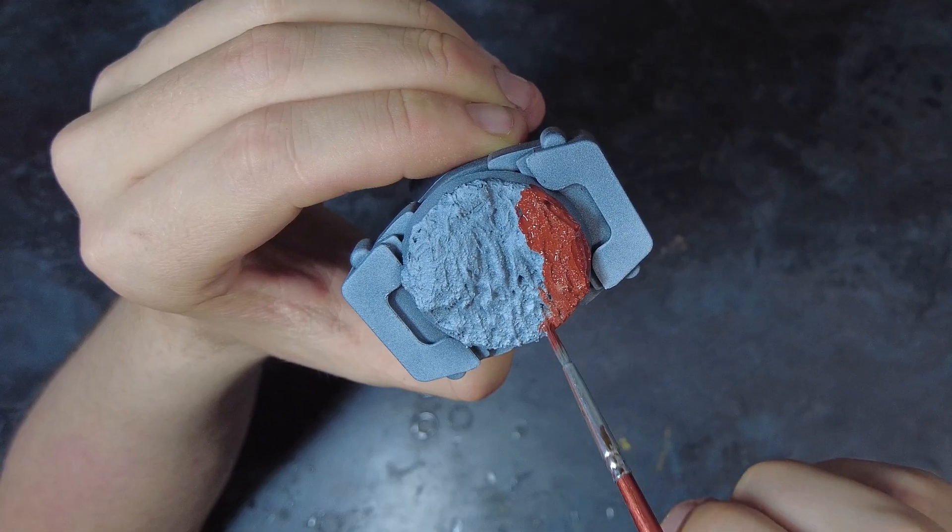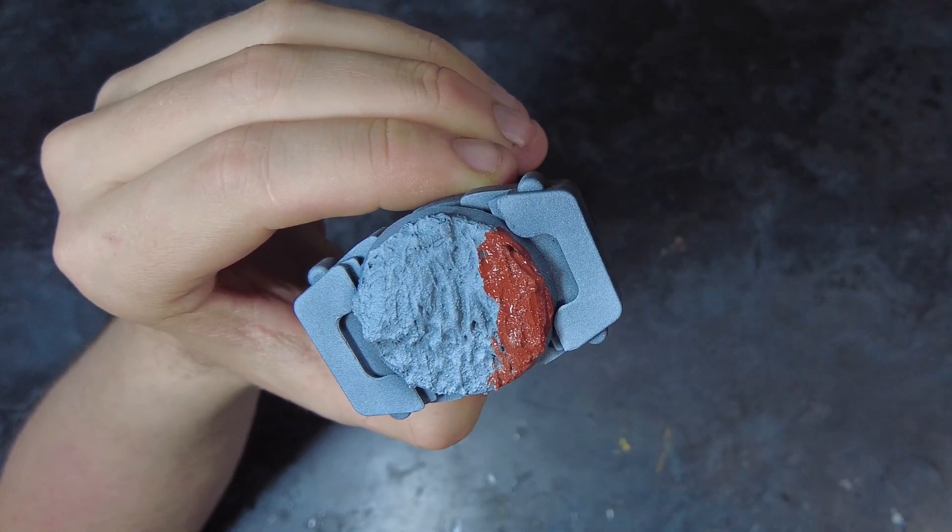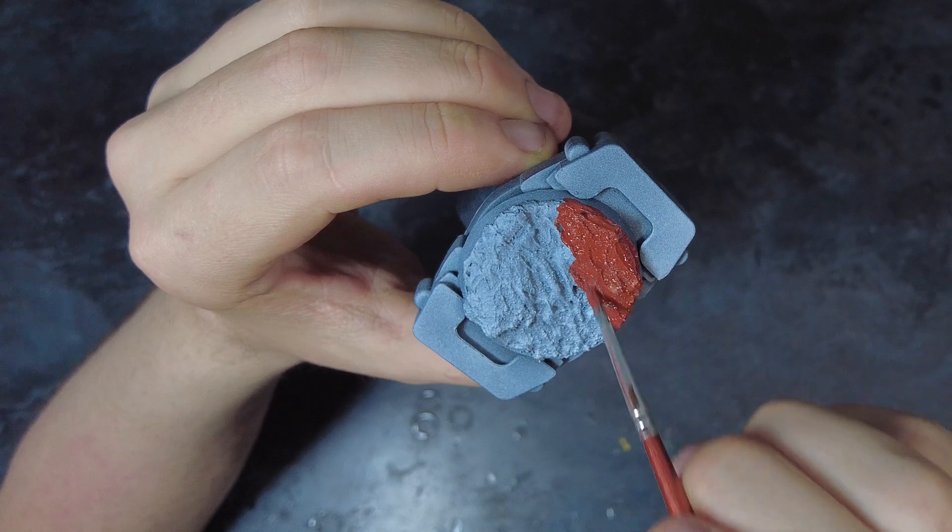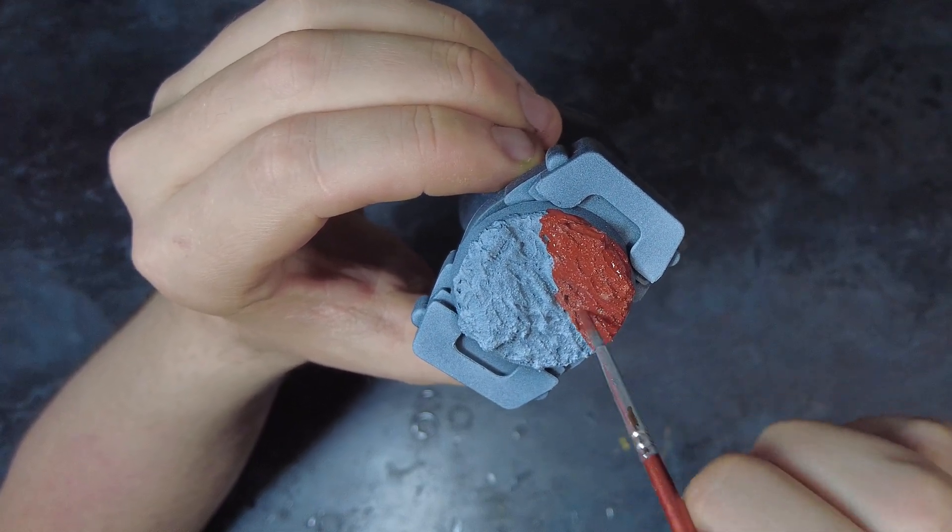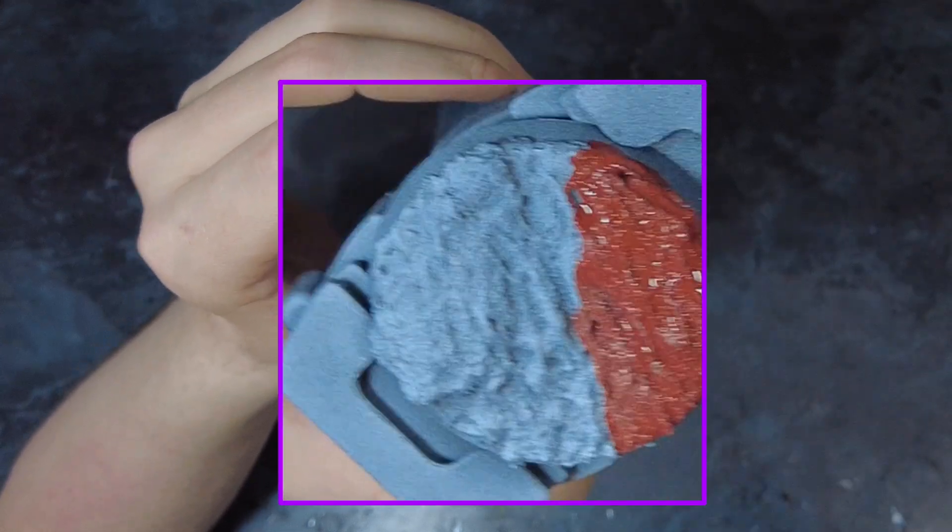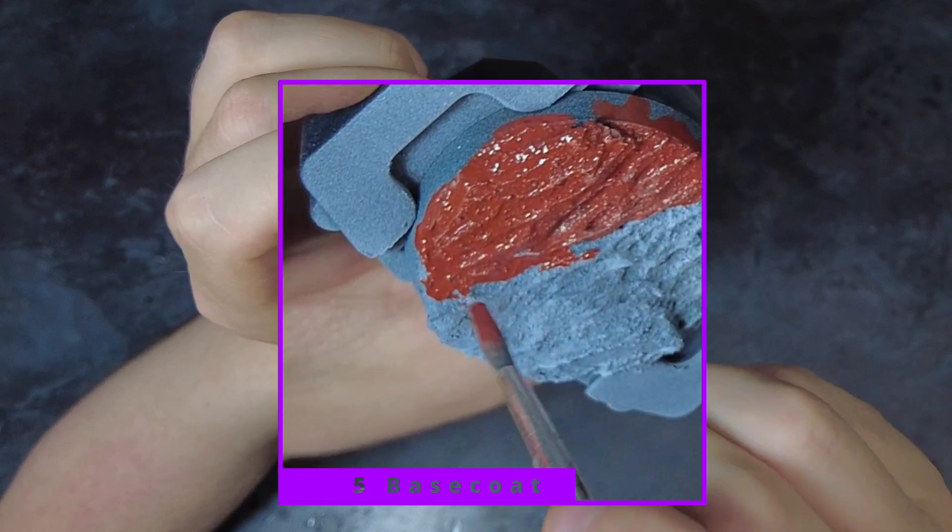If you do want a specific video around desert basing and colour schemes for that, please let me know down in the comments below and I can look at making that video for you. As with most of my painting projects, I am going to be starting off with a full coverage of a Chaos Black spray base coat, followed up with a white spray from above, and once this is dry we can move over to the actual painting.